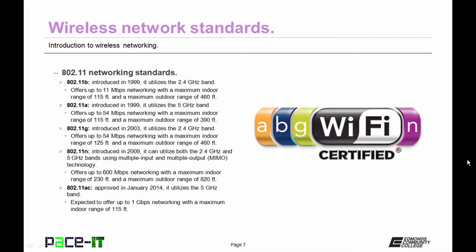Then there was 802.11a, also introduced in 1999, but actually introduced after 11b. It utilizes the 5 GHz band and offers up to 54 megabits per second of networking with a maximum indoor range of 115 feet and a maximum outdoor range of 390 feet. Then there was 802.11g, introduced in 2003. It utilizes the 2.4 GHz band and offers up to 54 megabits per second with a maximum indoor range of 125 feet and a maximum outdoor range of 460 feet.